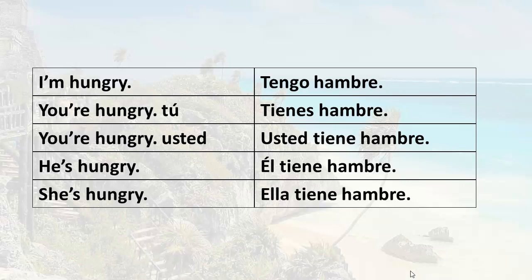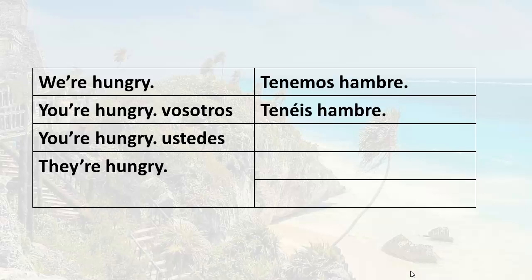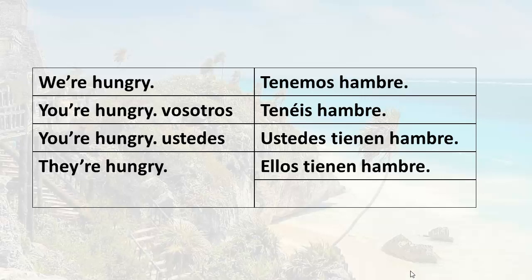She's hungry — ella tiene hambre. We're hungry — tenemos hambre. You're hungry using ustedes — ustedes tienen hambre. They're hungry — ellos tienen hambre, or ellas tienen hambre.